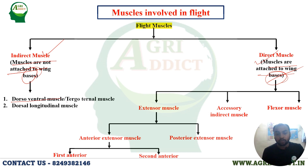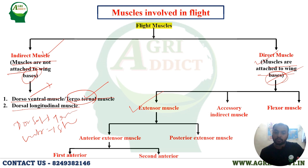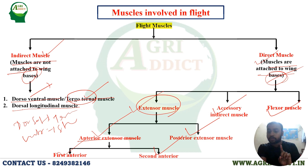The two types of indirect muscles are: the dorsoventral (or tergosternal) muscle — connecting the tergum and sternum — and the dorsal longitudinal muscle. Direct muscles include the extensor muscles, accessory indirect muscles, and flexor muscles. Exam question: the indirect muscles are the dorsoventral/tergosternal muscle and dorsal longitudinal muscle; the direct muscles are the extensor, accessory, and flexor muscles.